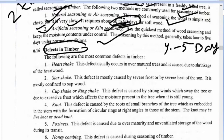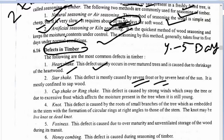Shakes are defects found in mature trees caused due to shrinkage of the heartwood. This defect is mostly caused by severe frost or by severe heat. It is mostly confined to sapwood. Cup shake or ring shake is a defect caused by strong winds.